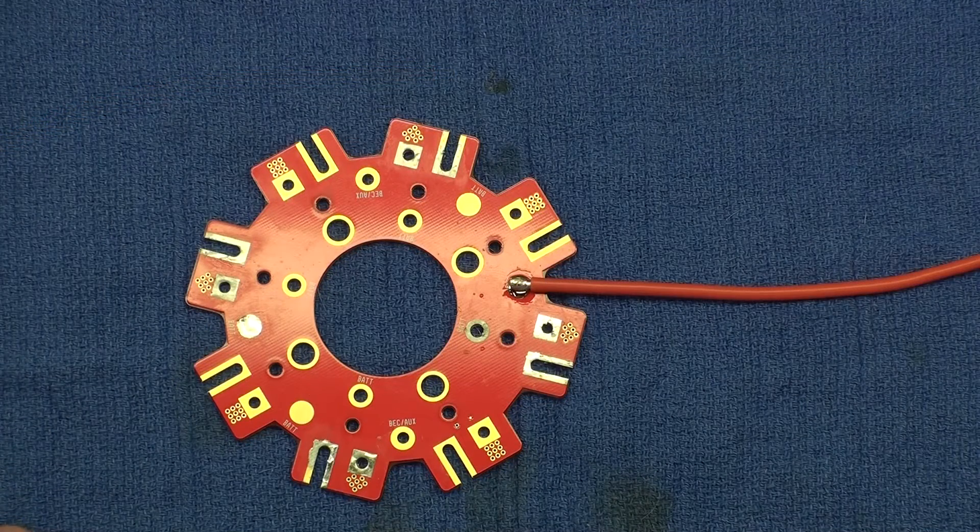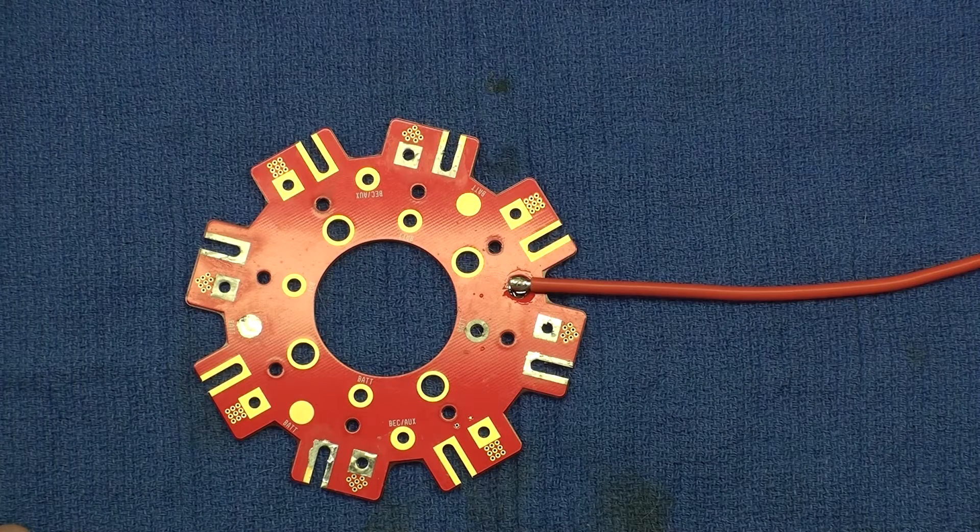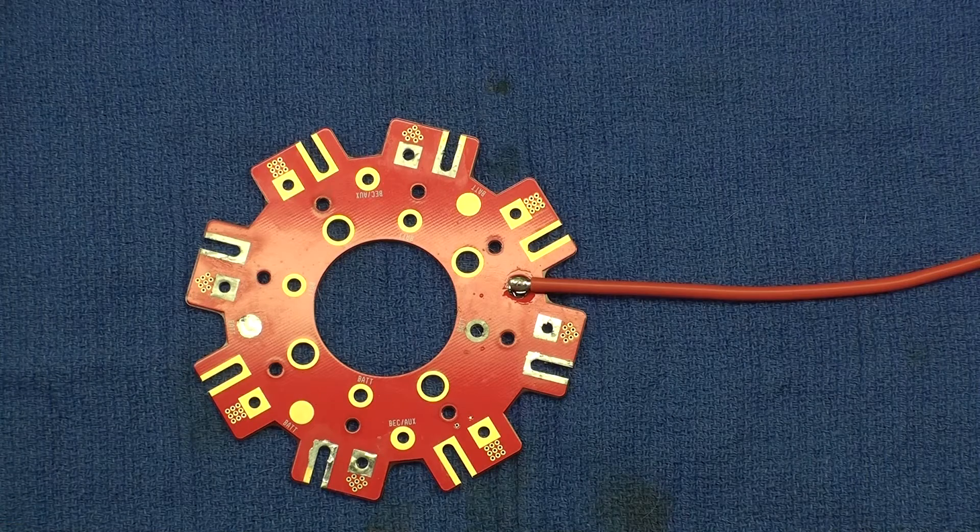Now we'll place the wire on top of the pad. When you add your iron, the two should melt together fairly quickly. Add solder to both to make sure you get proper coverage.